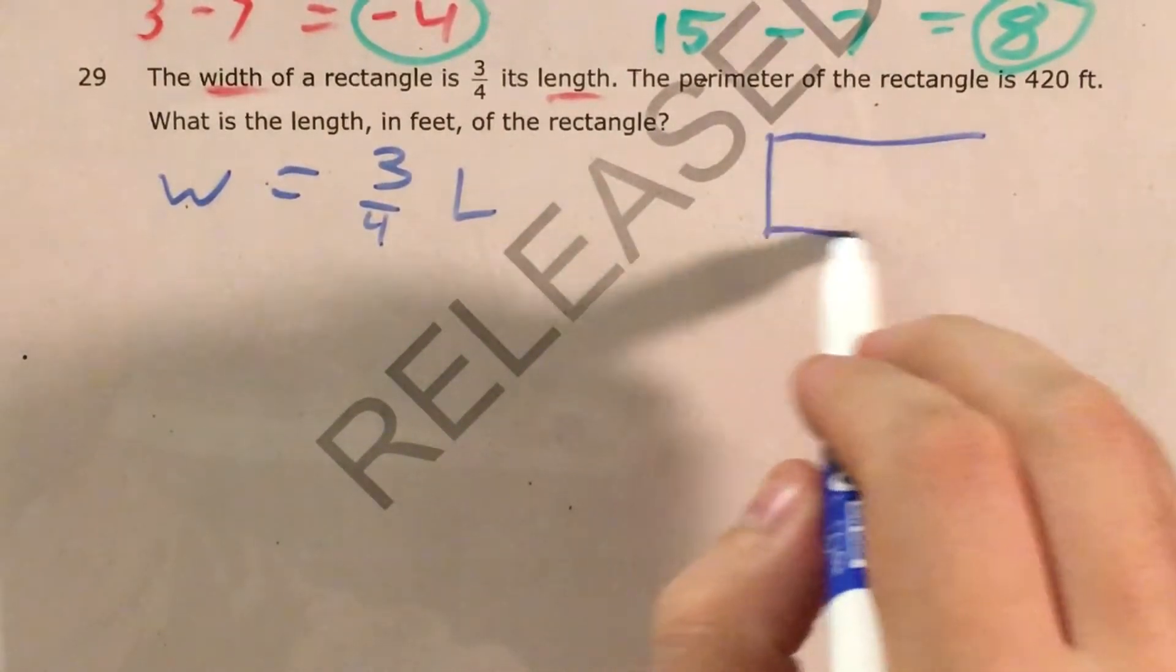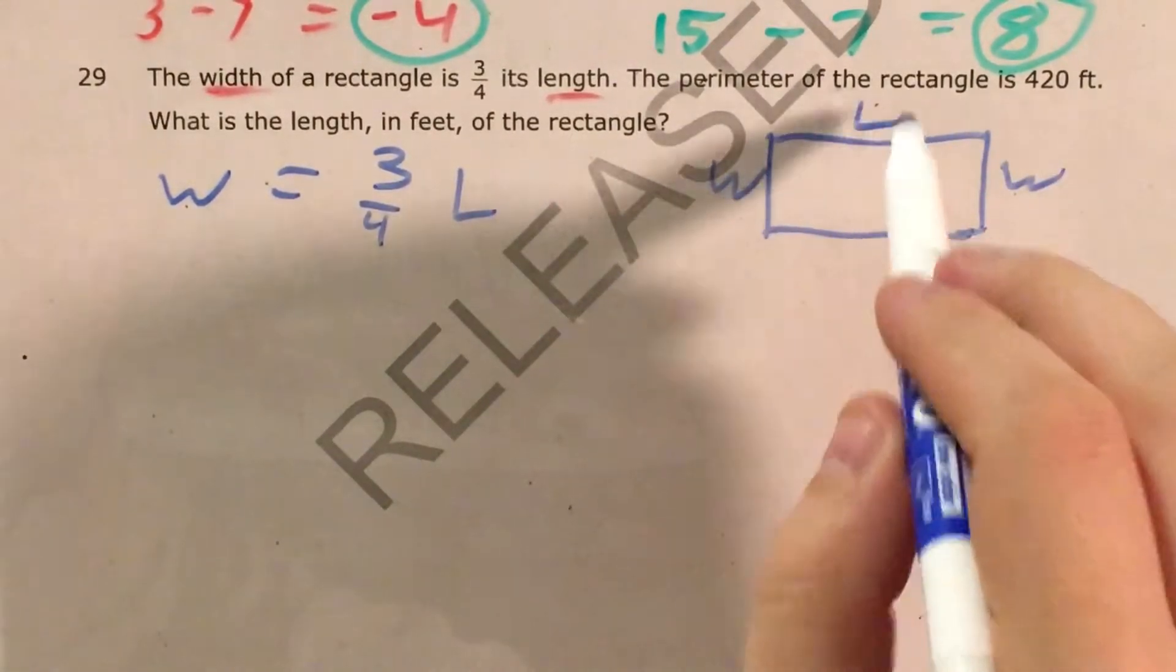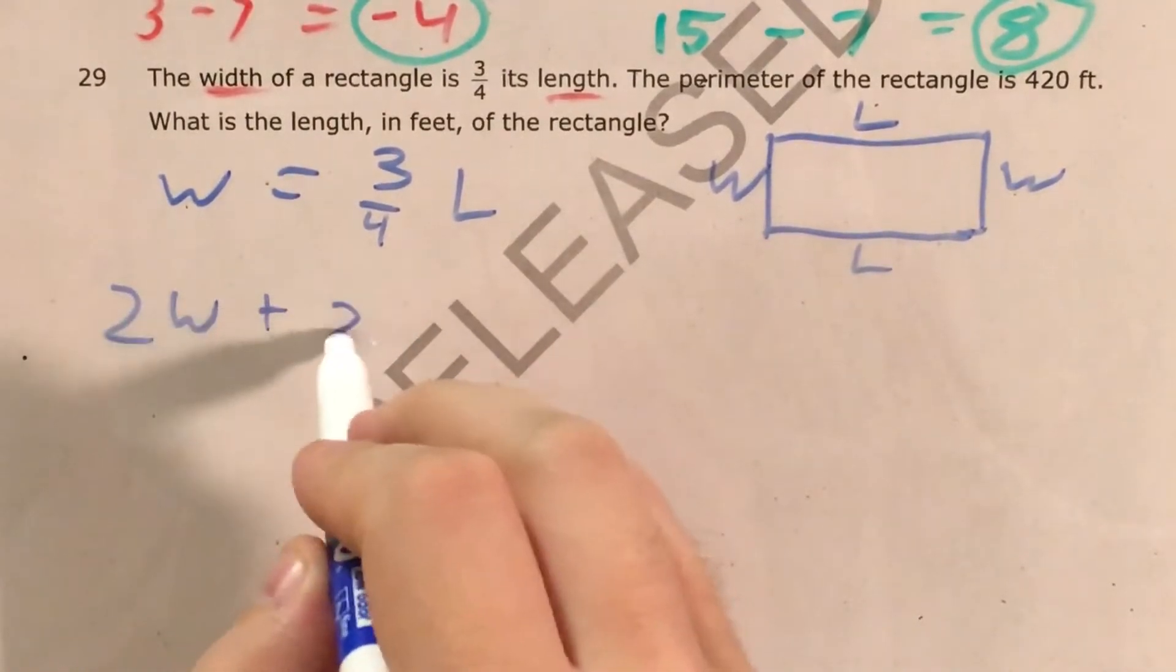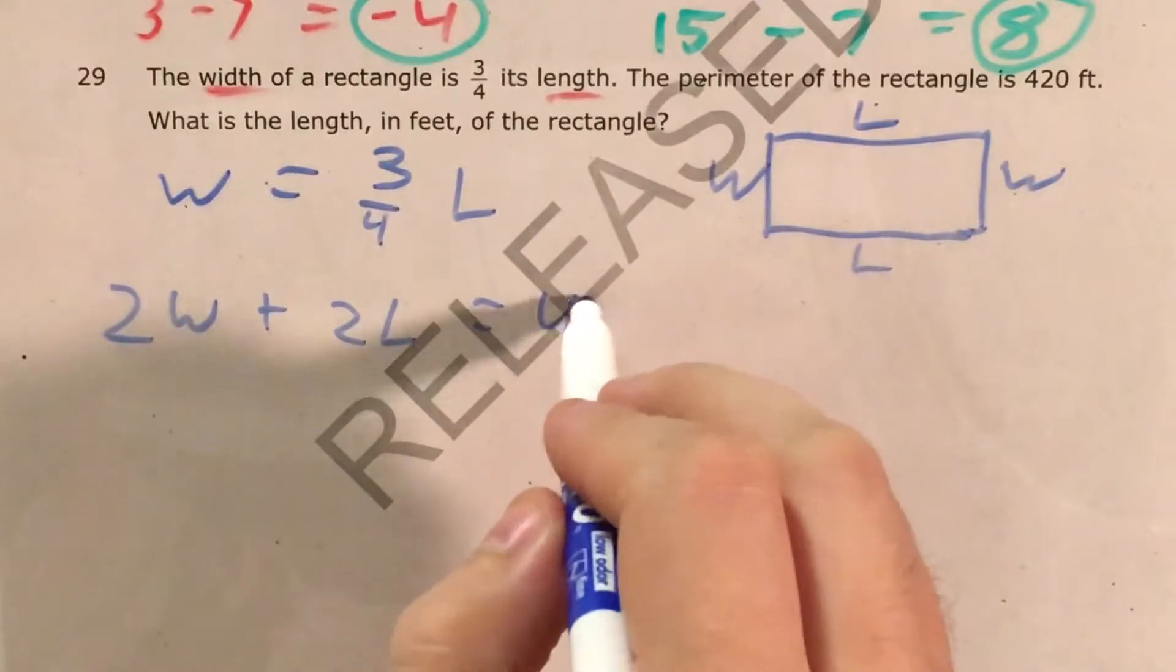Okay, how does perimeter work again? Well, if I draw this rectangle, I have a width and a width, a length and a length, which means that two widths plus two lengths will equal my perimeter, which in this case is 420.